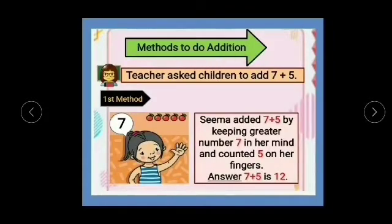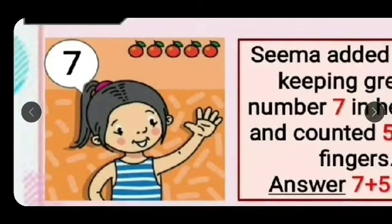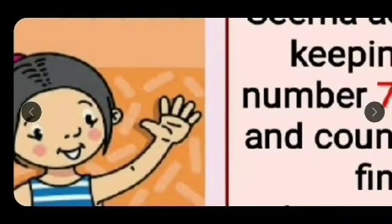Methods to do addition. In this slide we are going to use few methods to do quick addition. Teacher asks children to add 7 plus 5. Now look at the first method. This girl is Seema. Seema added 7 plus 5 by keeping greater number 7 in her mind and counted 5 on her fingers. So greater number 7 she kept in her mind.